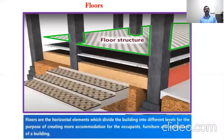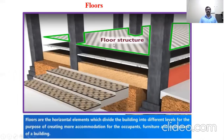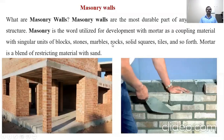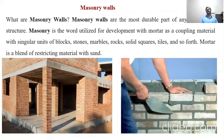Floors are the horizontal elements which divide the building level for the purpose of creating more accommodation for the occupants, furniture, and equipment. Masonry work consists of brick masonry work and stone masonry work. Brick masonry consists of types: first class brick, second class brick, and jumbo bricks.